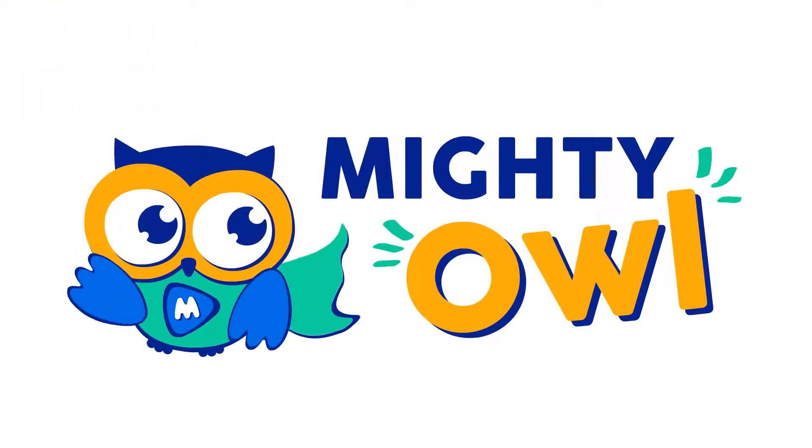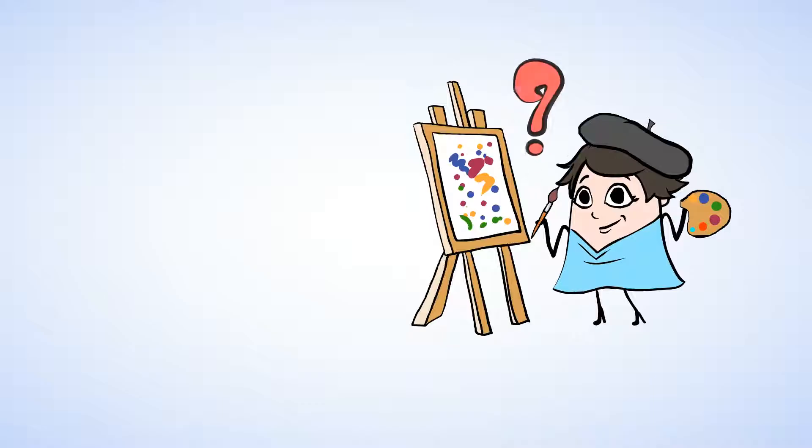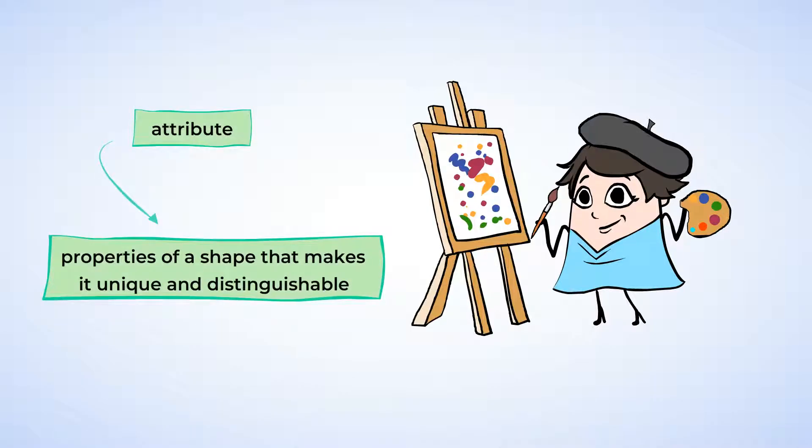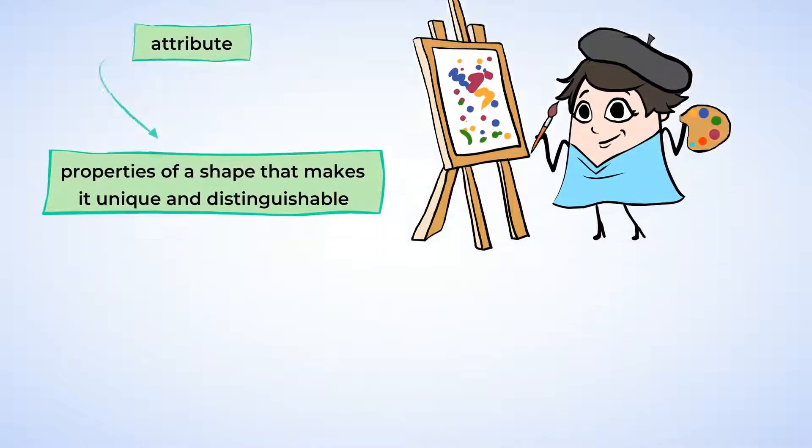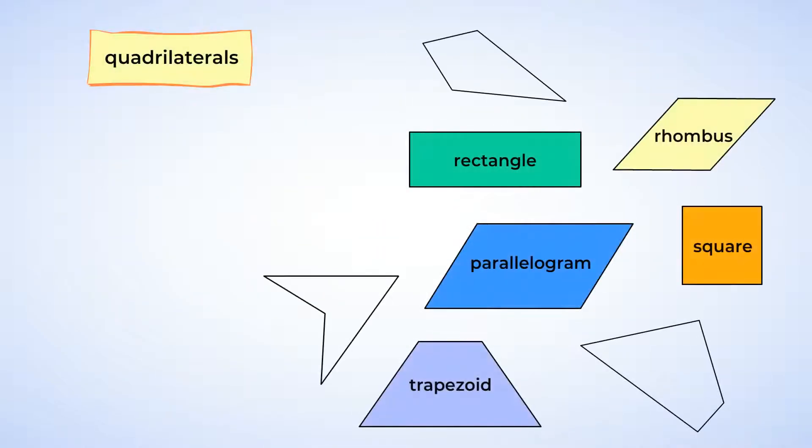Hello, this is Mighty Owl. How would you describe a painting to a friend? You'd probably tell them about the colors you see, the objects that are in the painting, or maybe even the artist or the style of art. What you then would be describing are called attributes. Shapes have attributes too, and today we're gonna dig in to find the attributes of quadrilaterals.